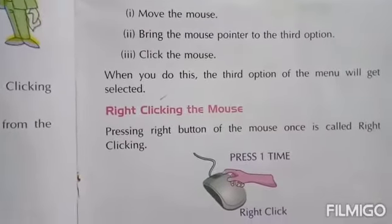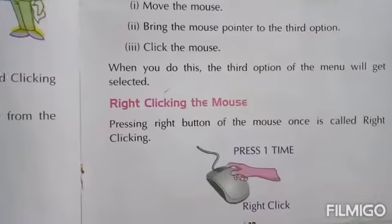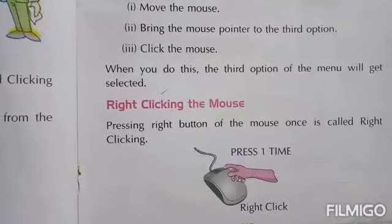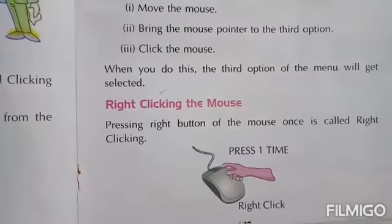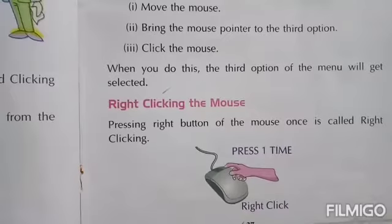Right-clicking the mouse: pressing the right button of the mouse once is called right-clicking. The mouse is right-clicked for displaying the shortcut menu.